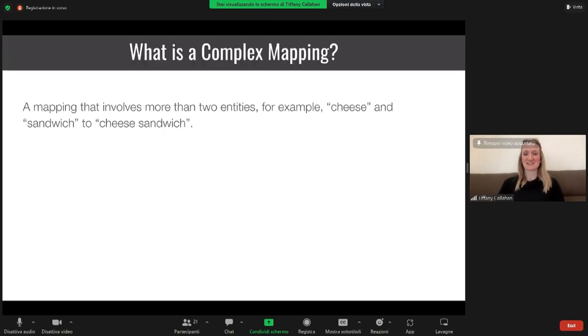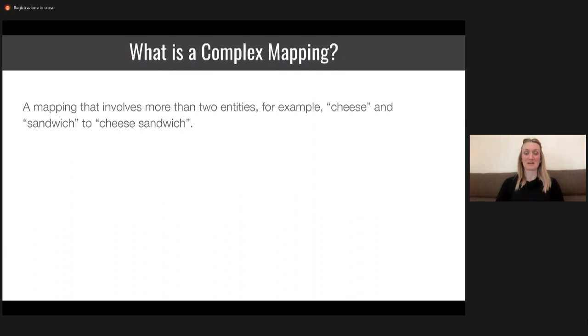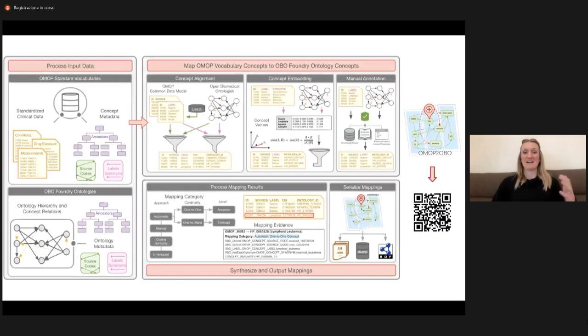Just to get us all on the same page, Nico will do a much better job of providing more context about what this means in his next presentation after mine. But we like to think about complex mappings as a mapping that involves more than two entities. For example, cheese and sandwich, when we really want to map cheese sandwich. This is a very simple initial explanation, but this is the foundation of what we mean when we're talking about a complex mapping. Since the examples today will be presented from OMOP to OBO, and I have to shamelessly plug it, I just want to give you a very quick and dirty overview.